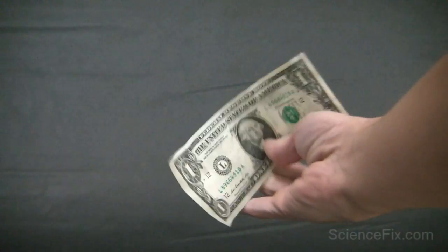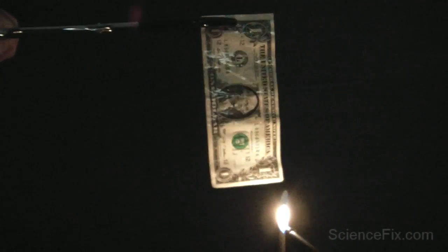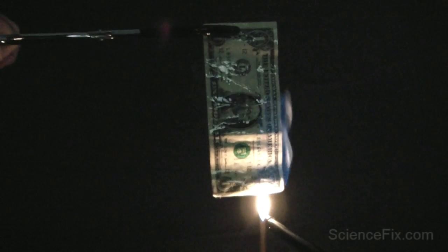How does this all work? The alcohol starts burning and releasing heat energy as a result of that chemical reaction. What happens is the water in that mixture absorbs that heat energy that's released and the water goes from a liquid to gas phase.